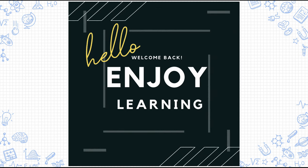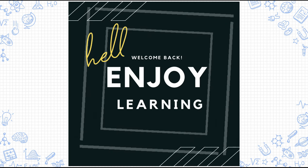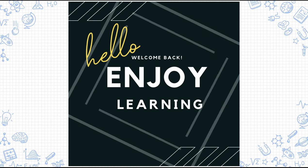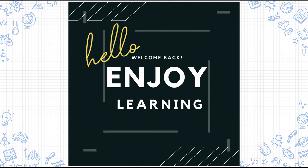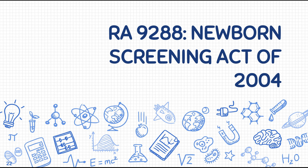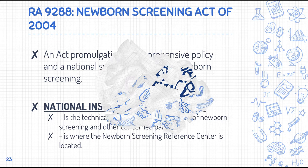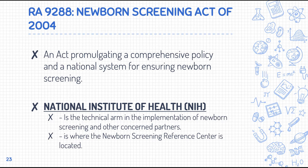This is a continuation of what we discussed last time regarding inborn errors of metabolism and newborn screening. Going back to RA 9288, also known as the Newborn Screening Act of 2004, the main goal of this act is to promulgate a comprehensive policy and a national system for ensuring newborn screening.